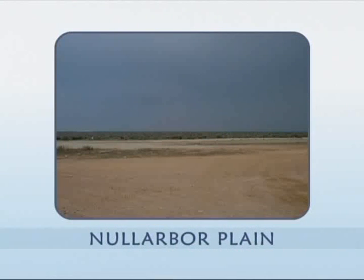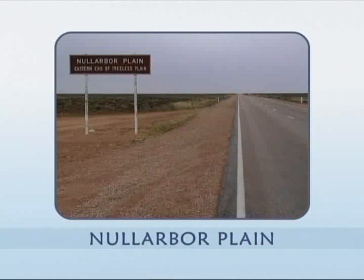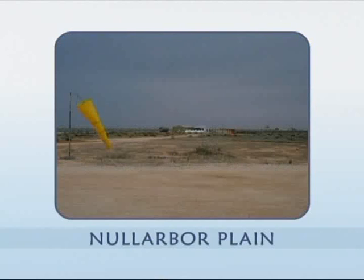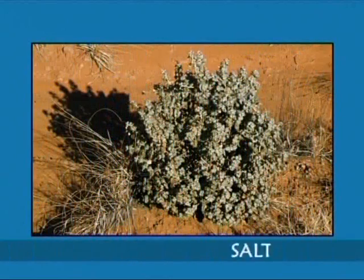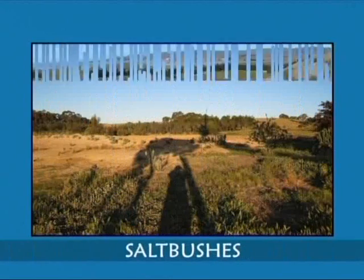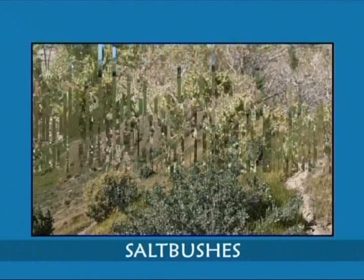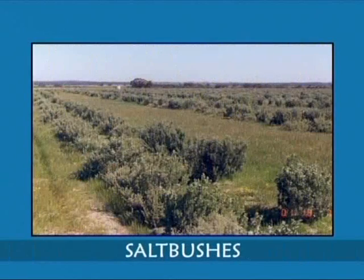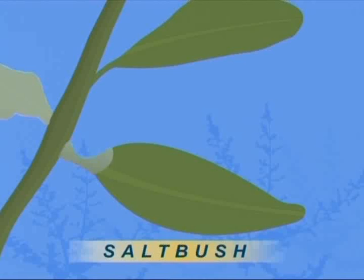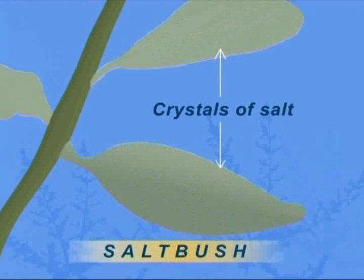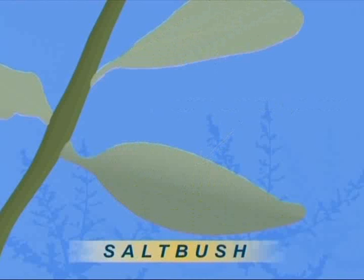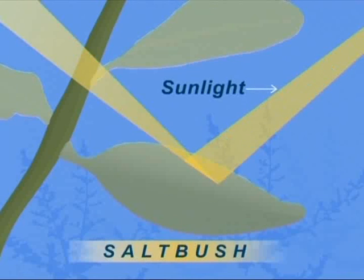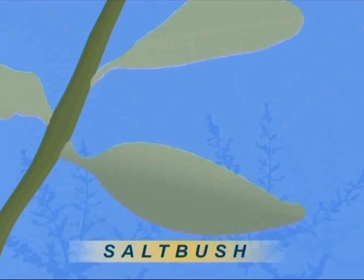Like the salt bushes on Australia's Nullarbor plain — Nullarbor means no tree. This plain is flat and twice as big as England. Similar to salt bushes in other dry shrublands, the Nullarbor salt bushes have a means of getting rid of excess salt. They do this by making crystals of salt on their leaves, giving the salt bushes a grey-green color and a rough texture. These crystals reflect sunlight and keep the salt bushes cool.